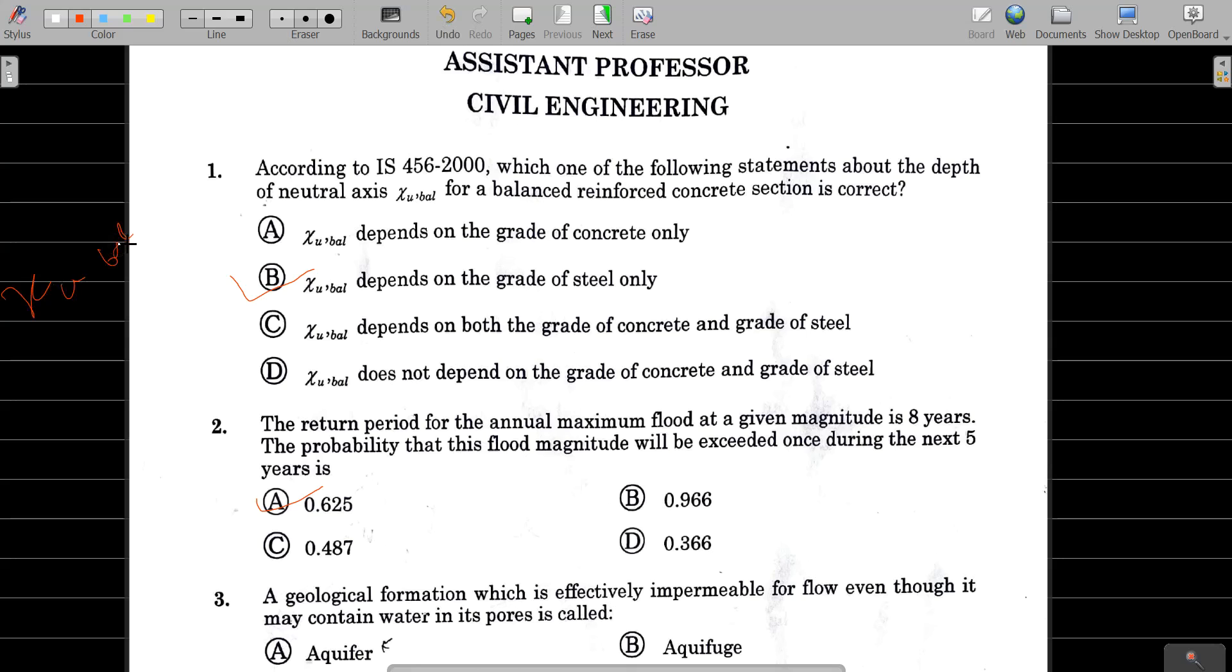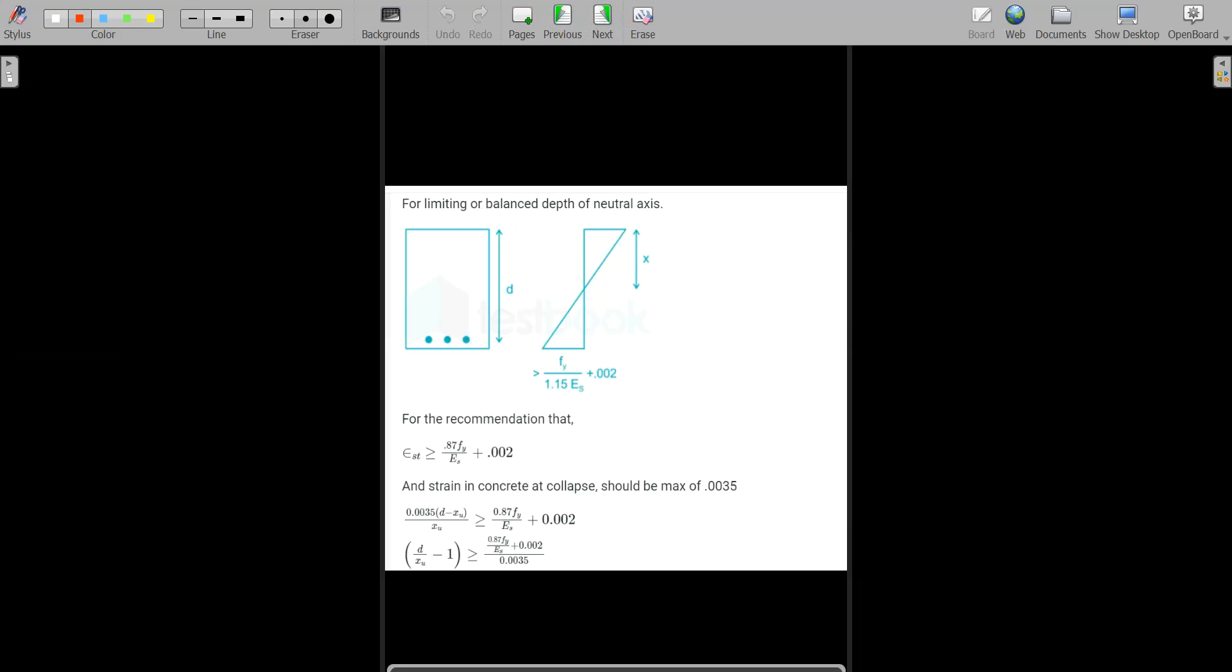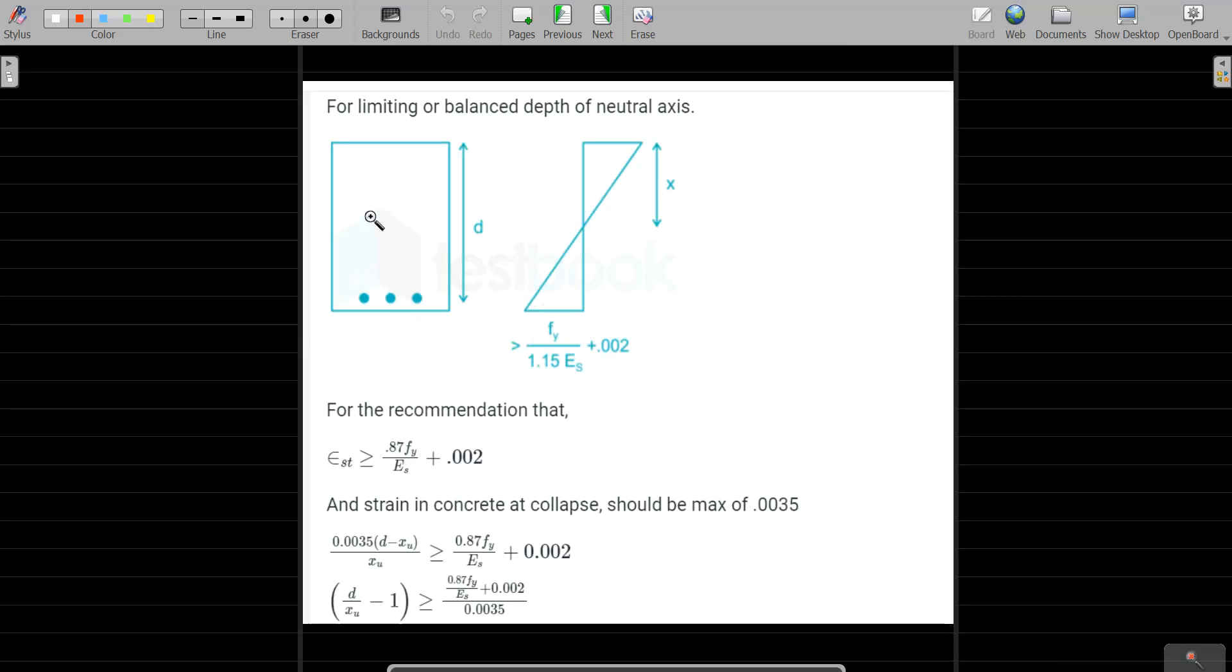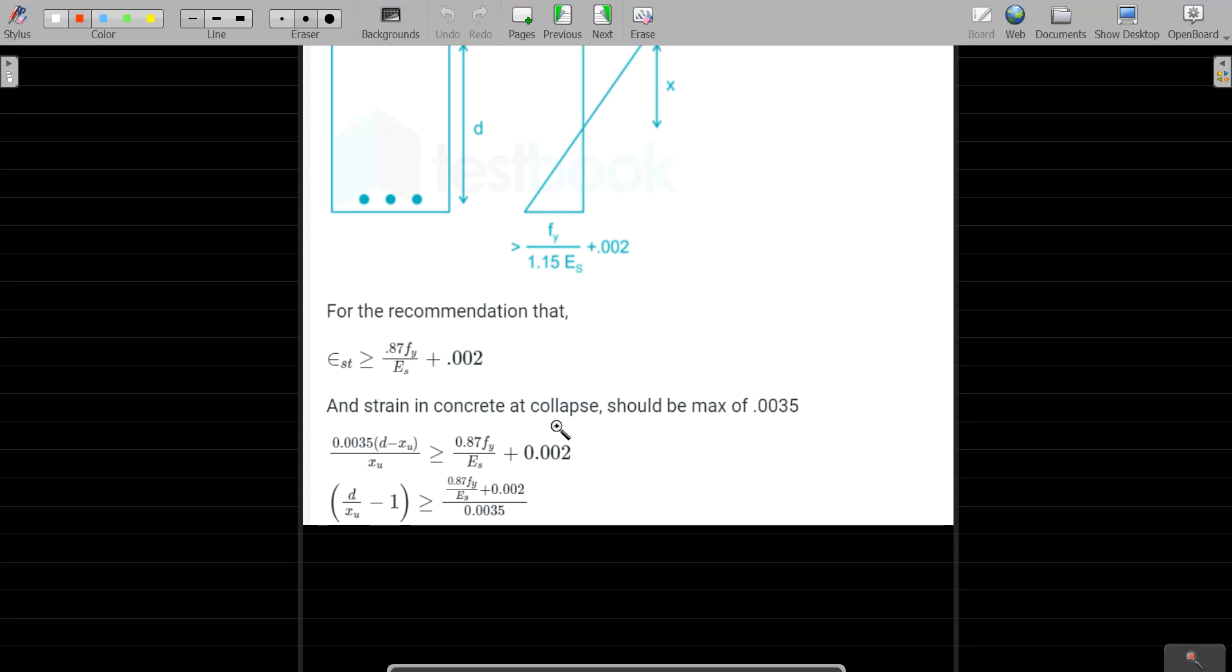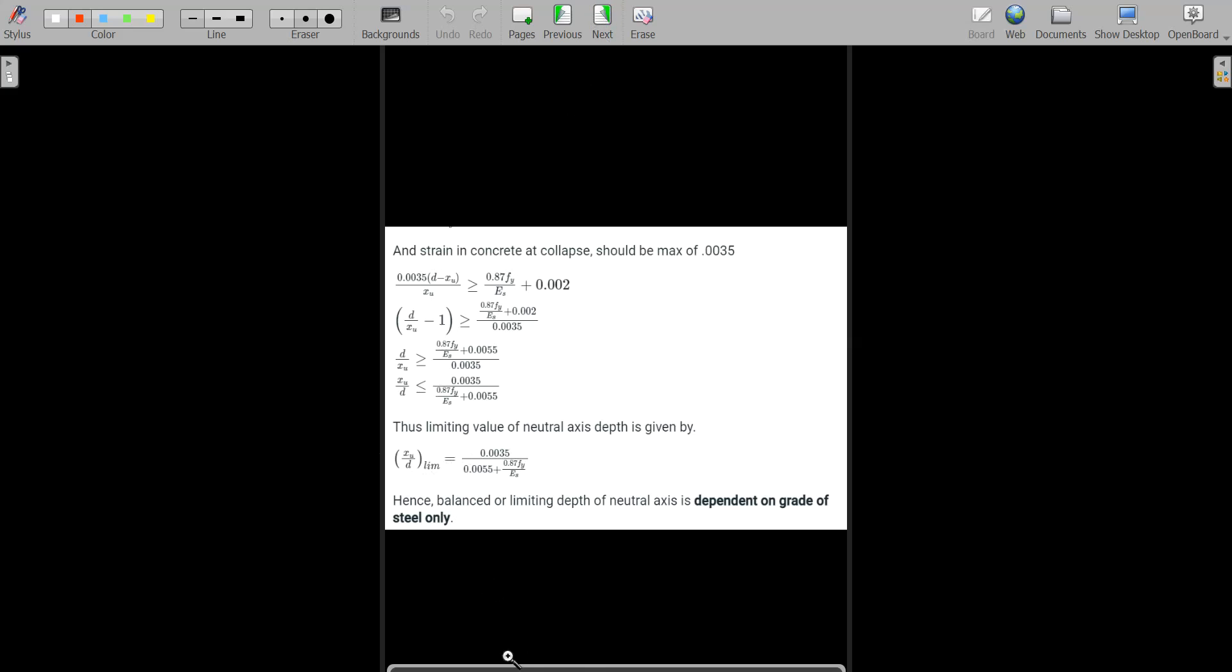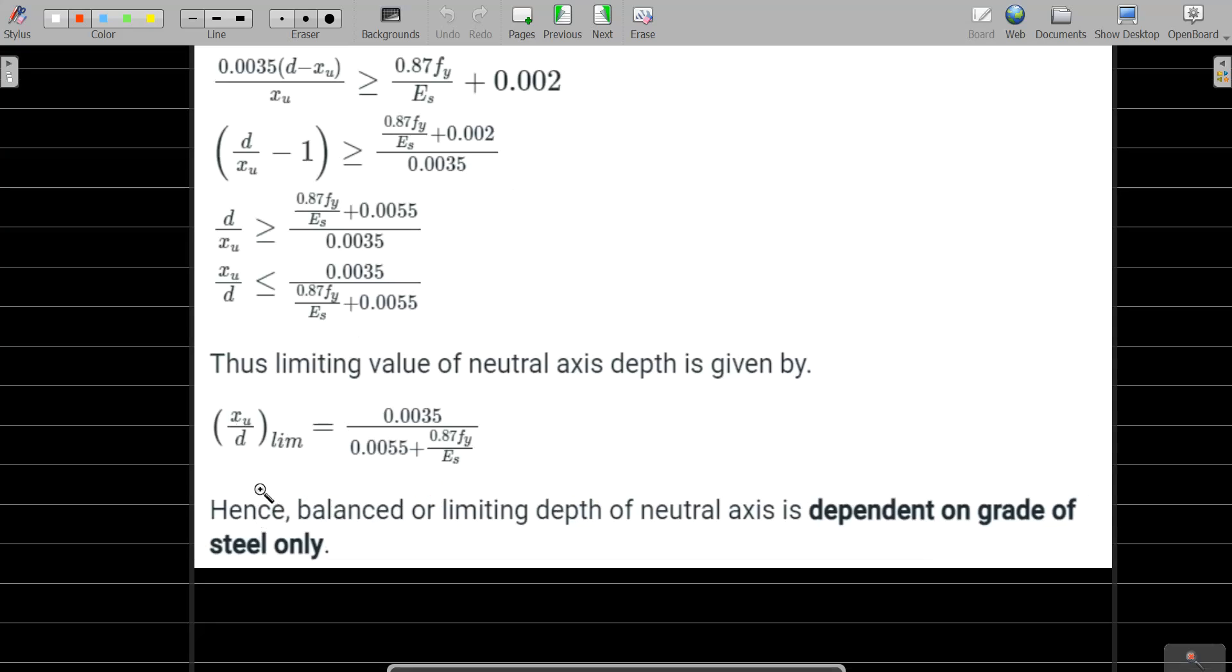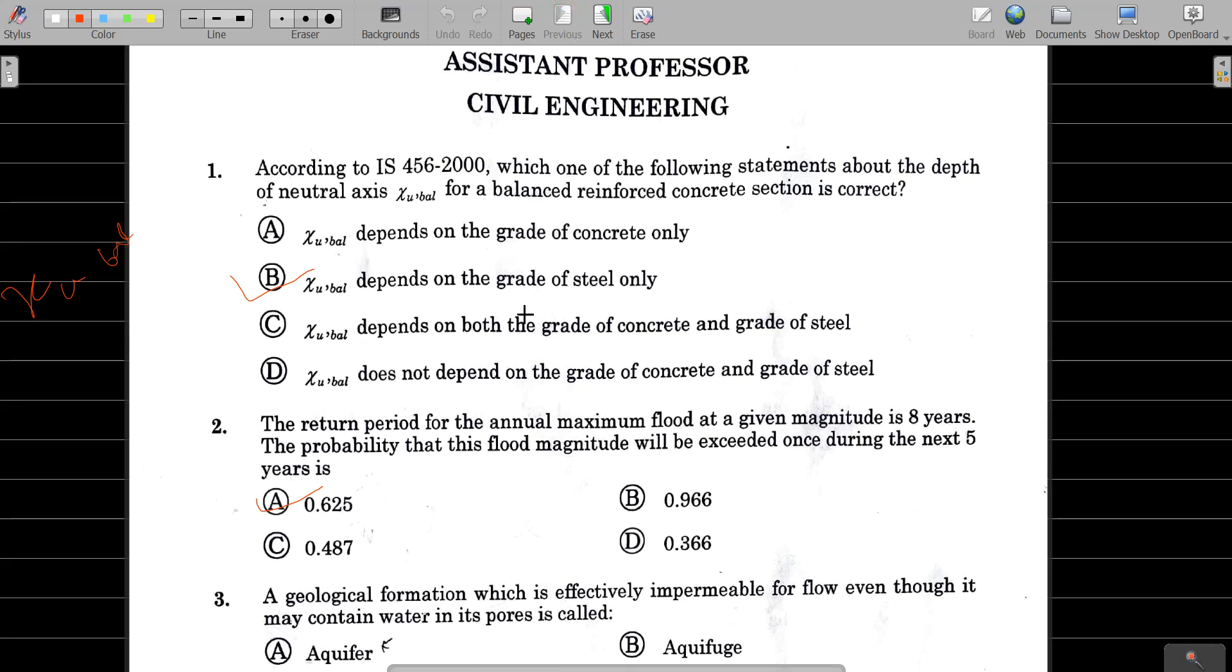Because we are looking at the limiting depth of balanced section, it depends on the grade of steel. This is the strain diagram. Using the strain compatibility equation, we get XU by D ratio equal to 0.0035 divided by 0.0035 plus 0.87 FY by ES. This is independent of concrete grade, only dependent on grade of steel. So the correct option is B, grade of steel only.